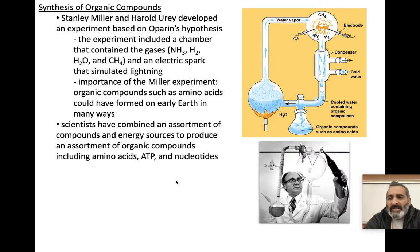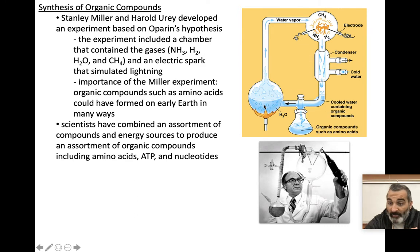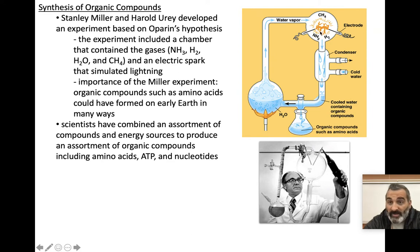Somebody decided to test this. Stanley Miller and Harry Urey said let's take Oparin and Haldane's hypothesis and test it. They built a device in which they simulated the ocean with water and heated it up — because at the bottom of the ocean you have hydrothermal vents that can heat areas of the ocean. This created water vapor. They added methane (CH4), ammonia (NH3), and hydrogen gas (H2). They used an electric circuit electrode to simulate lightning, and ultraviolet lamps too, to simulate what happened on early Earth.